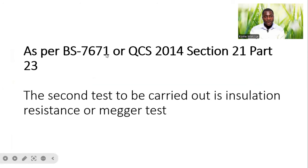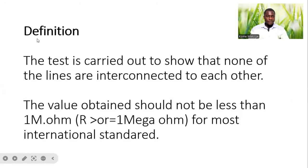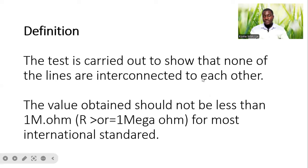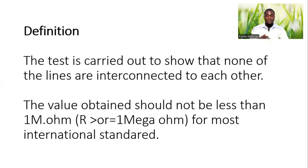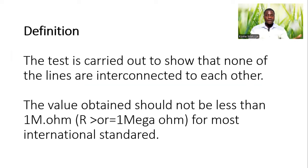Insulation resistance test. We will be referencing BS 7671 or QCS 2014 section 21 part 23. This is the second test that should be carried out as per code. The test is carried out to ensure that none of the lines are interconnected to each other. So if we have different wires that have been pulled on site — phase, neutral, and earth — we have to ensure that we conduct this test to verify there is no interconnection between the different cables.